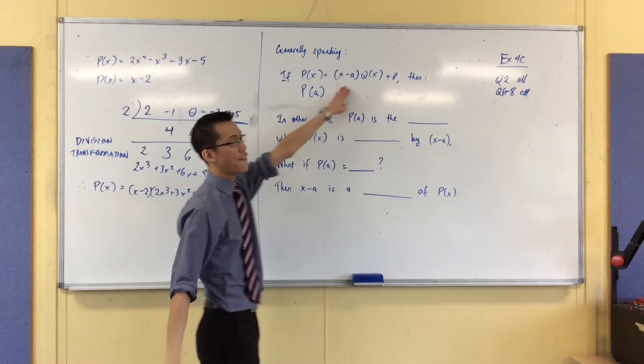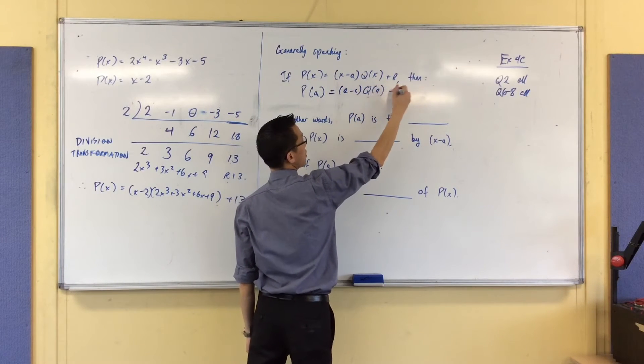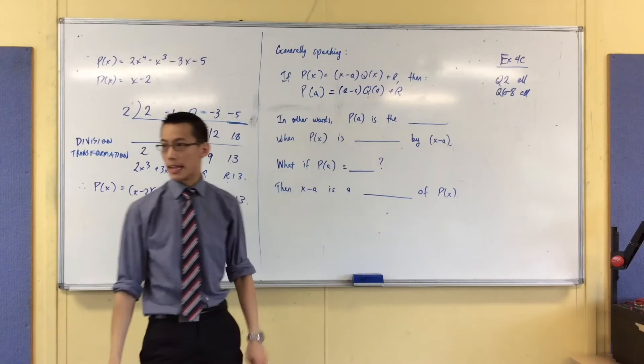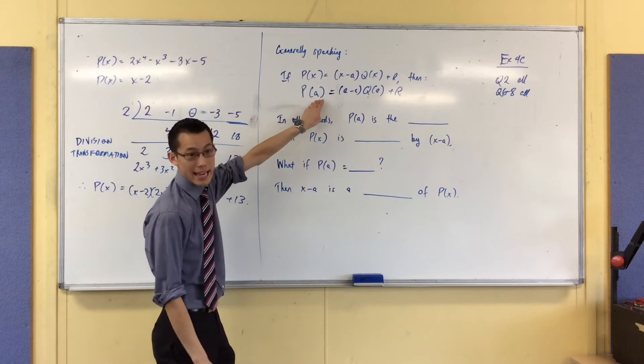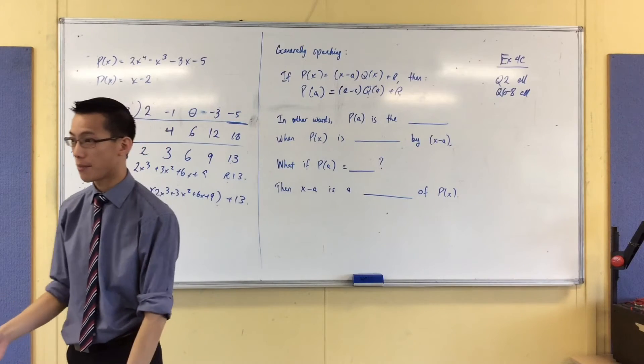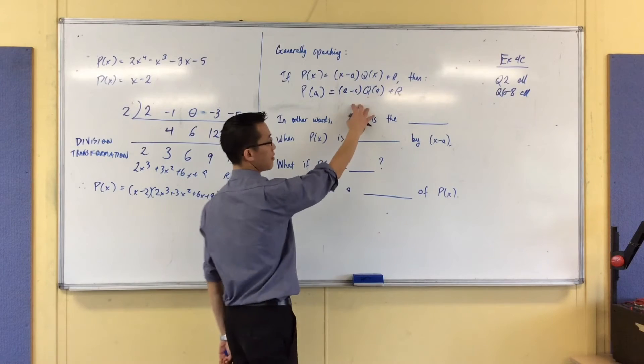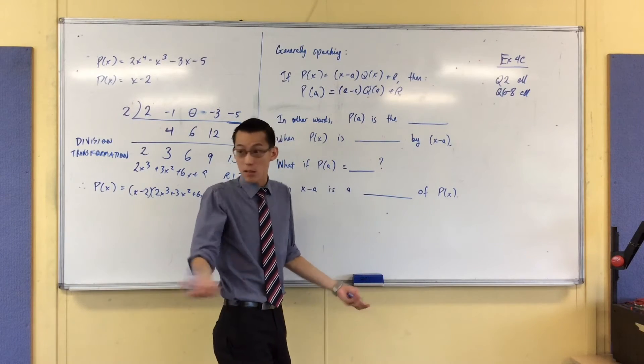Because of the way I factorized this first bit, you end up getting a take away a. Do you see that? I've just substituted in a's everywhere I see x's and there were just two spots. Being that I've got a take away a at the start there, what happens to that first expansion? It just becomes zero. It disappears.